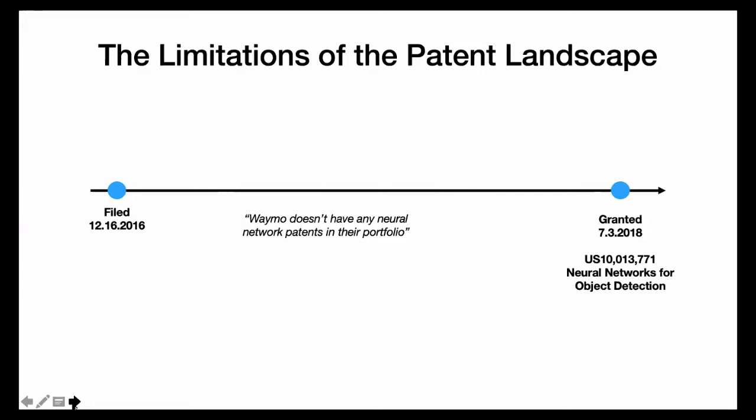So I just did a quick query of the Waymo patent portfolio, and I was able to make the statement: Waymo doesn't appear to have any neural network patents in their portfolio, even though there's all this talk of this approach. But I did hedge my statement saying, well, they may have filed the patents and it hasn't published yet, or they may be keeping it a trade secret, or they might not be actually applying it to self-driving cars, who knows.